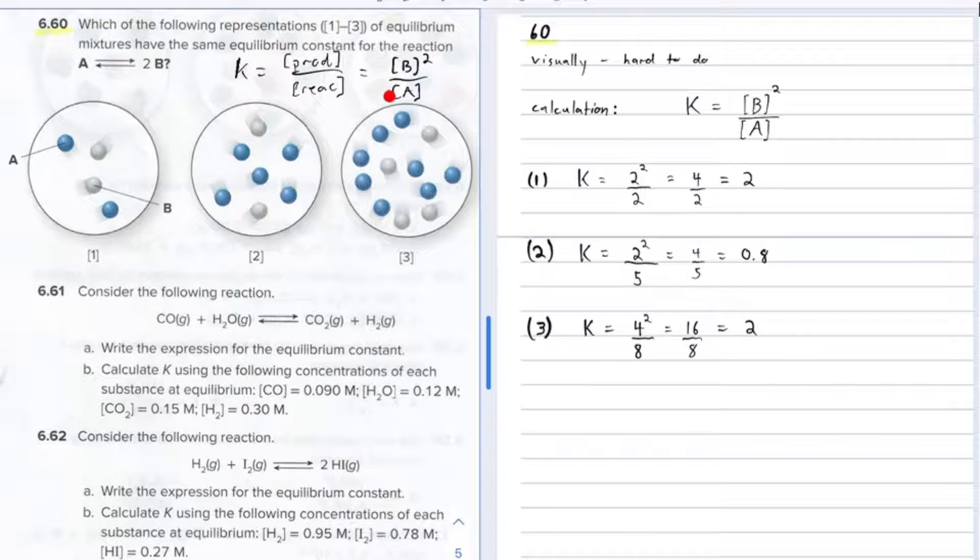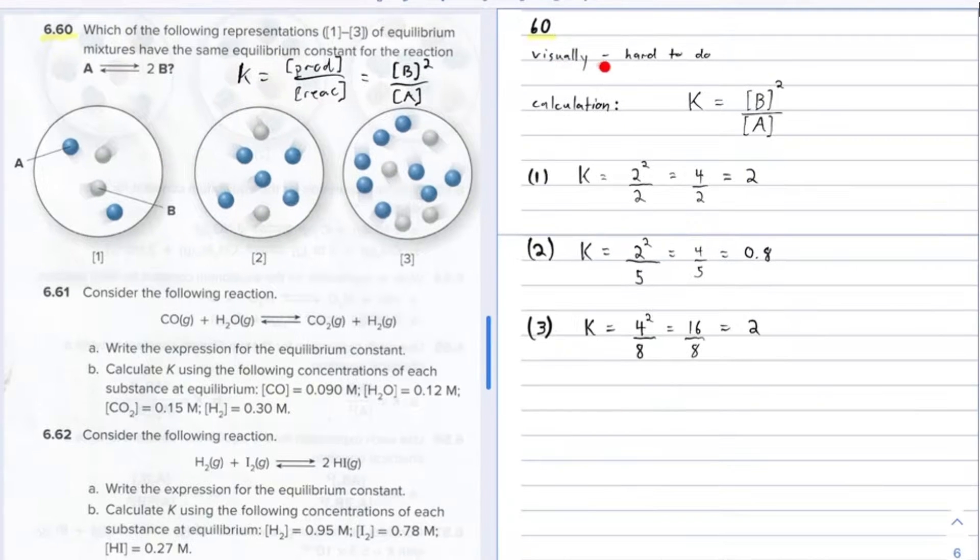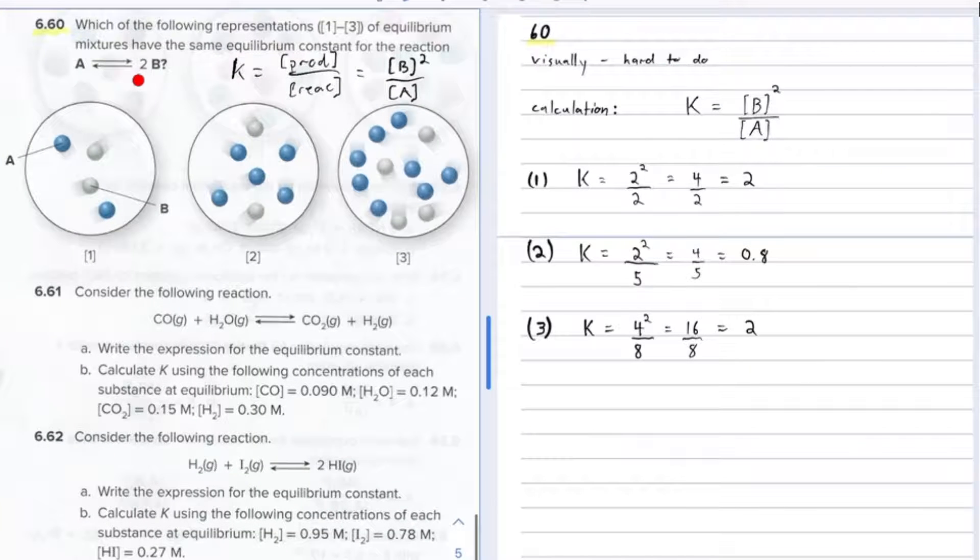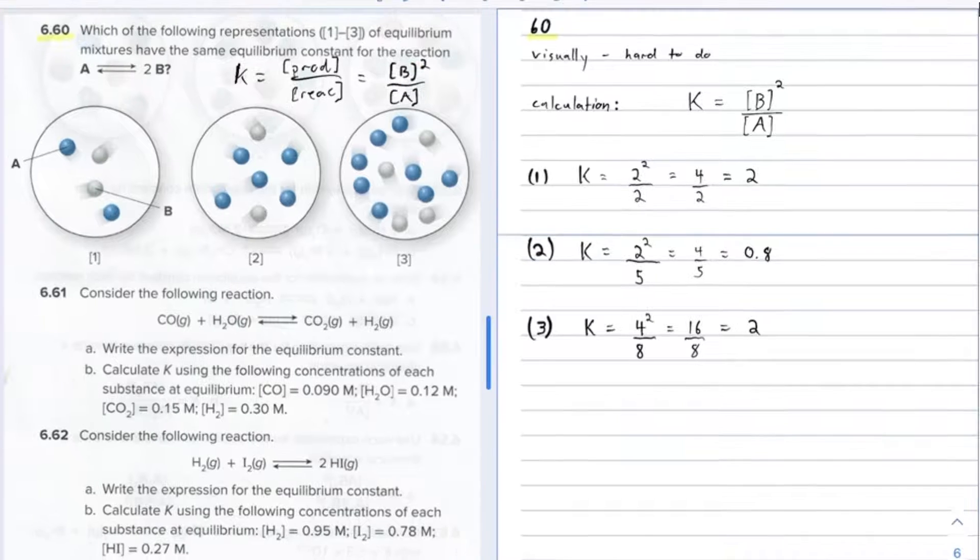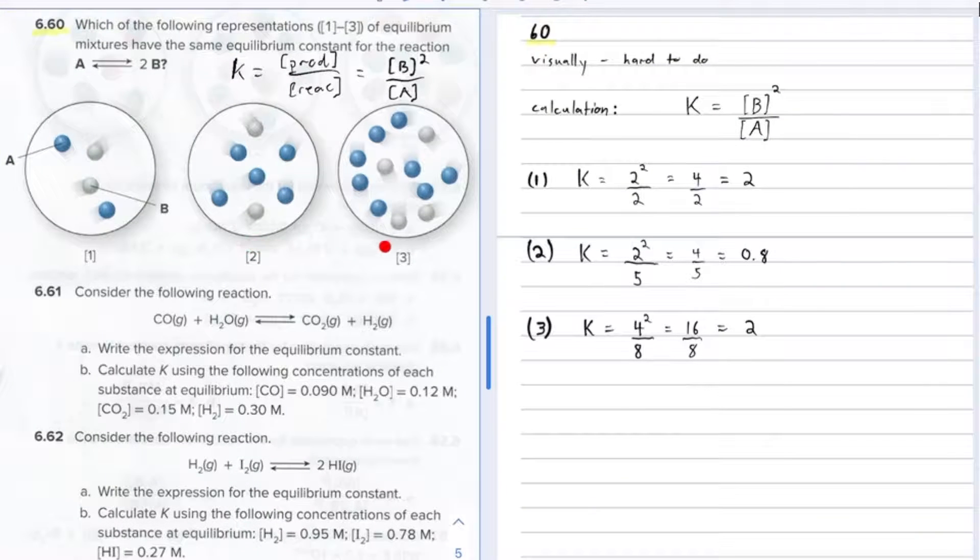Now we could answer this question visually. We could look at how much products B there are in each one, and then see, also look at how much reactants there are in each one, and see what ratio looks about the same. But visually it's kind of hard to do because of this squared. The product concentrations are going to be squared. So visually it's hard to do. I would say just calculate this one. Let's calculate the equilibrium constant for each of these three. Then we'll see exactly what ones are equal.